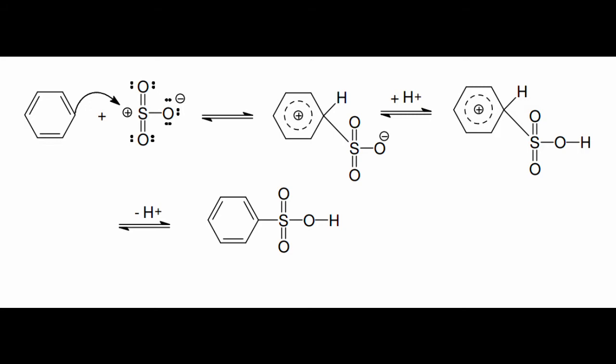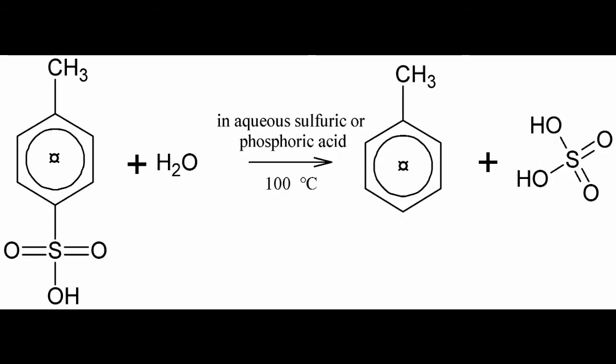Okay, so the question of course is, can we go back? The sulfonation reaction itself practically goes to completion, because the reversed reaction is very slow at the reaction temperatures. However, if we manage to remove free sulfur trioxide from the equilibrium, we can completely shift the reaction towards the educts. This can easily be achieved by heating the sulfonate in aqueous sulfuric acid.